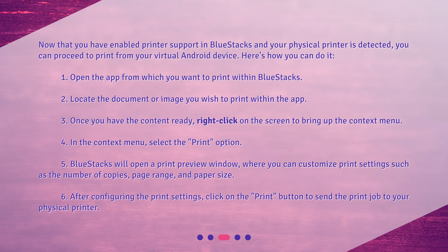5. BlueStacks will open a Print Preview window, where you can customize print settings such as the number of copies, page range, and paper size. 6. After configuring the print settings, click on the Print button to send the print job to your physical printer.